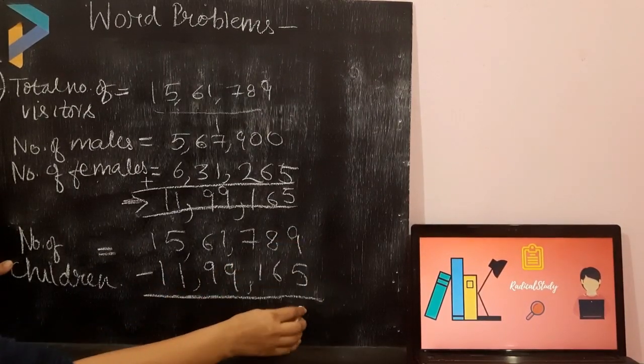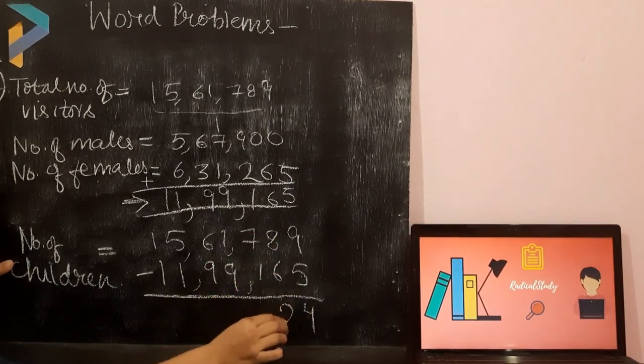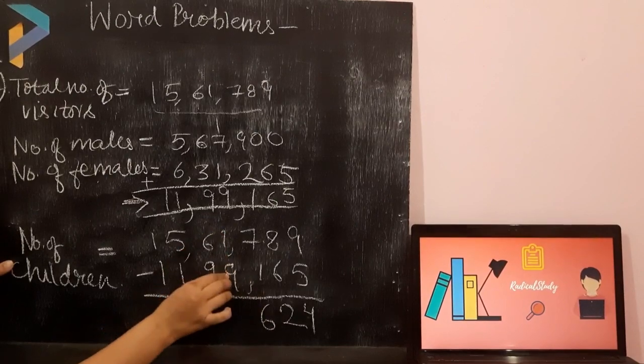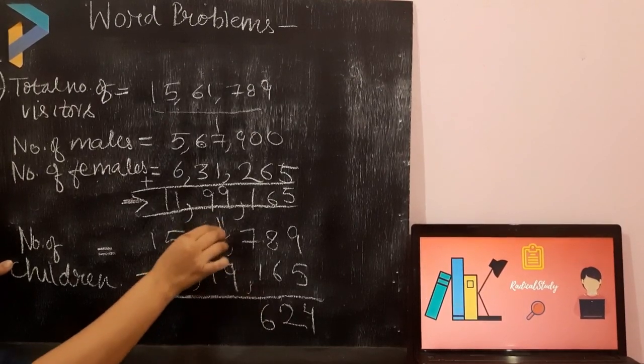9 minus 5 is 4. 8 minus 6 is 2. 7 minus 1 is 6. 1 minus 9, we have to take carry. It will become 11.